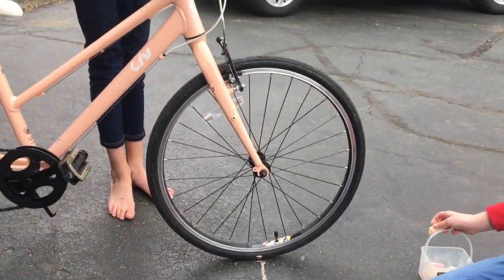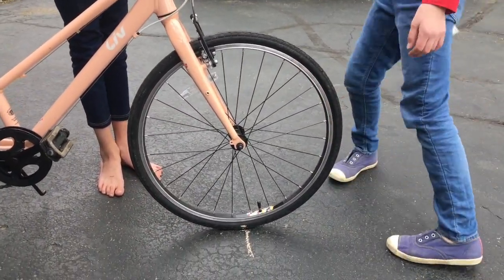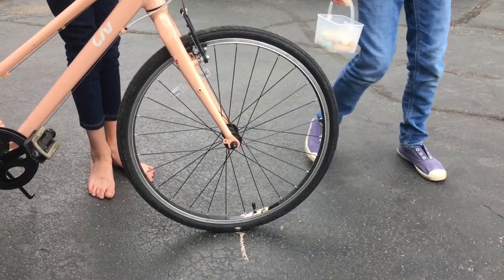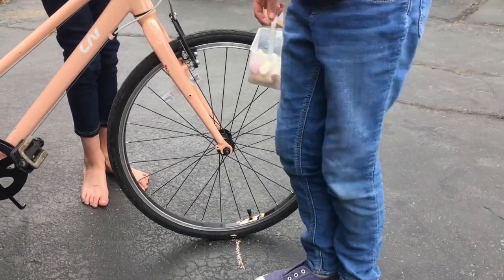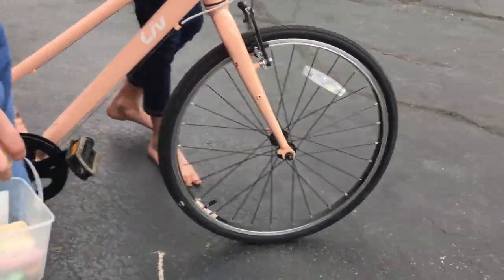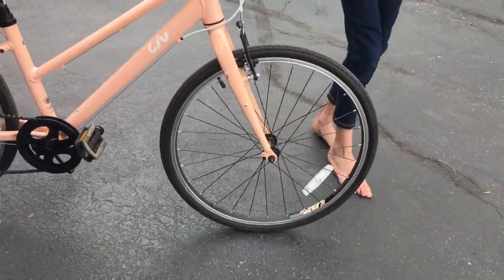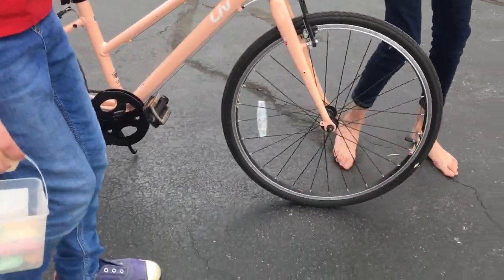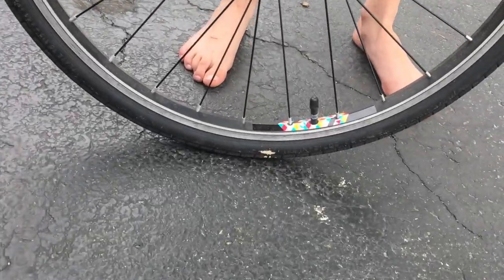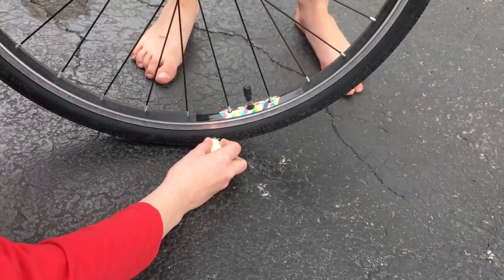In a second, Sienna is going to roll the bike forward so that the tire does one revolution - that means one full spin. Libby, you need to tell her when to stop once that mark is back down on the ground. Okay, we're rolling. Stop right there. The mark is back down.